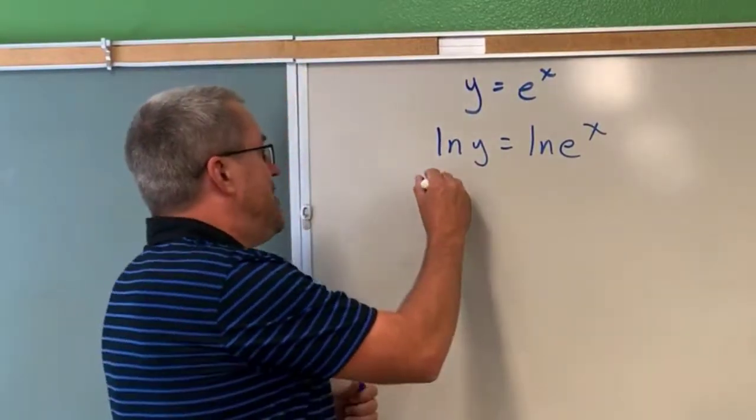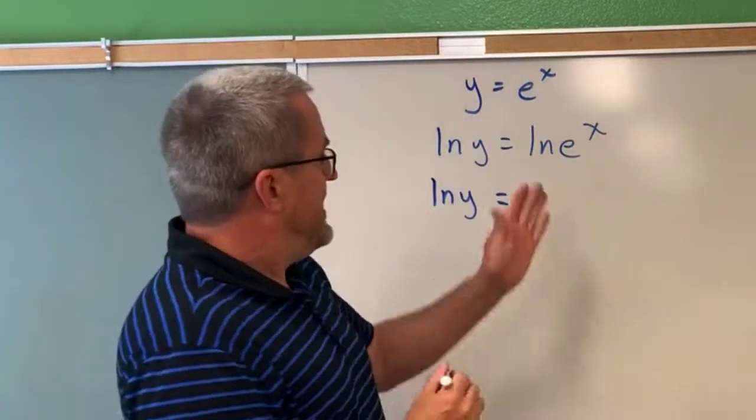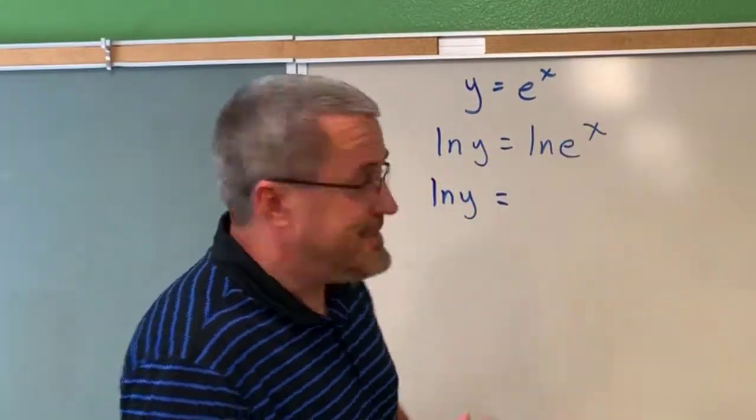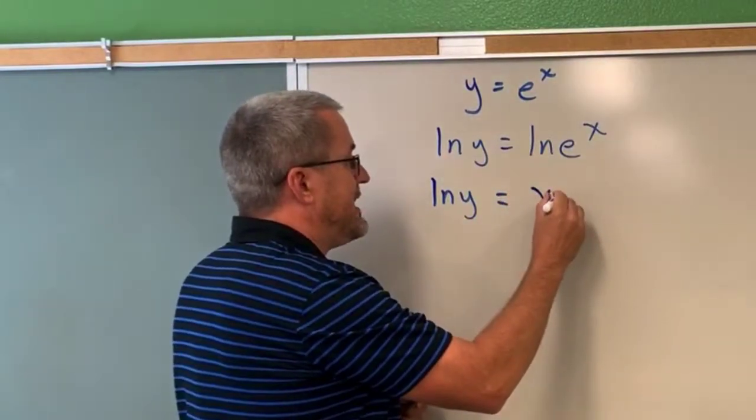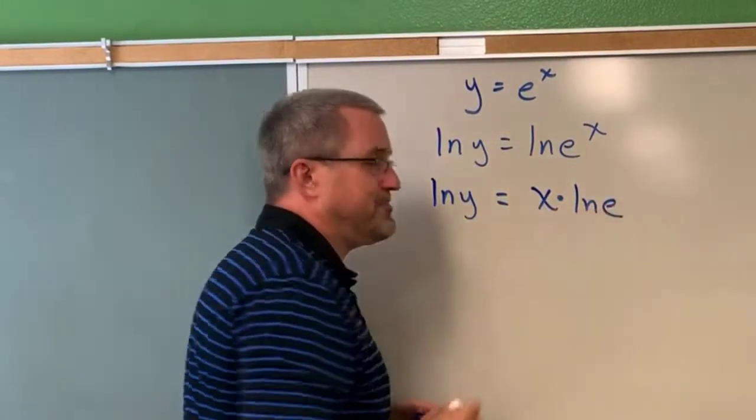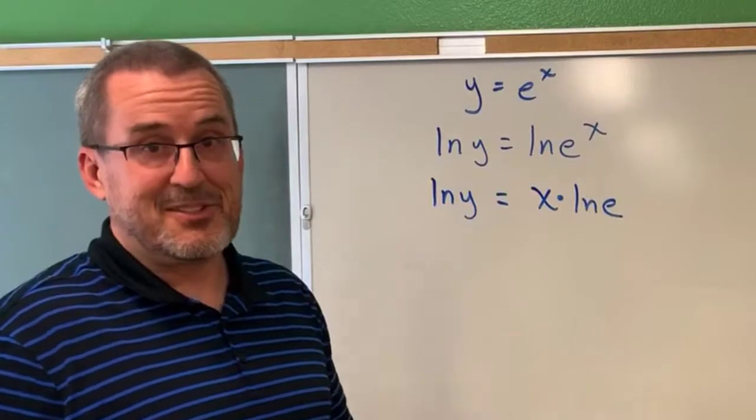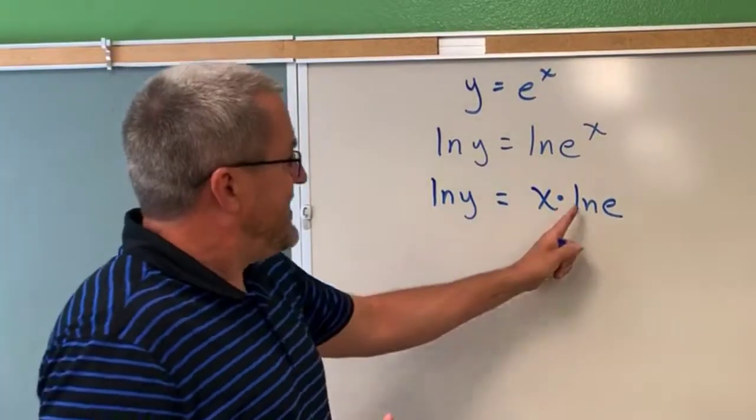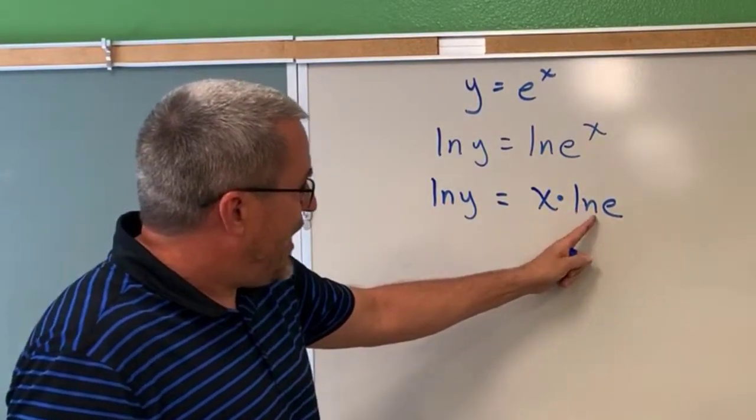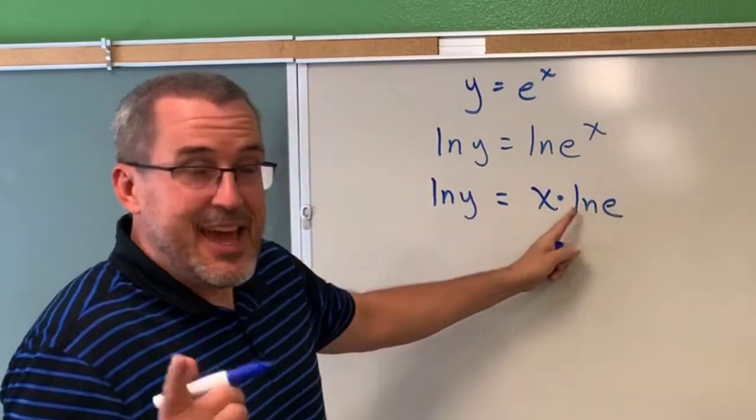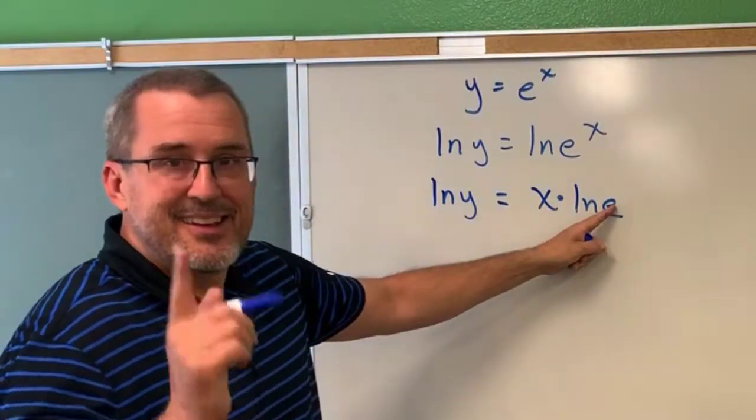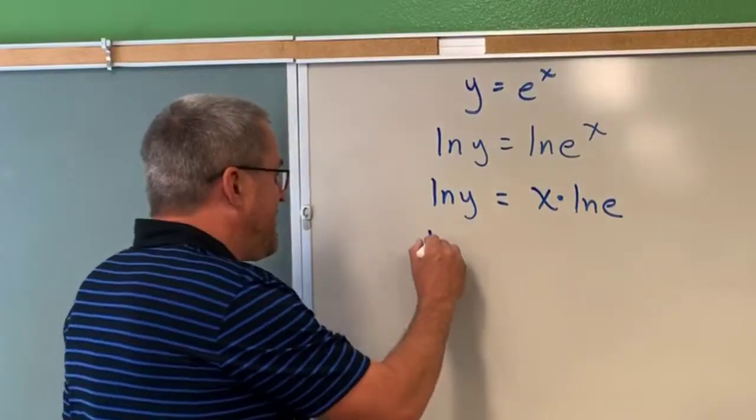But first we're going to apply some algebraic rules. Do you remember the rule of logarithms that says the natural log of e^x is equivalent to x times the natural log of e? That's a nice little move because the natural log of e, the power on e that gives e, the exponent on e that gives e, is just one.